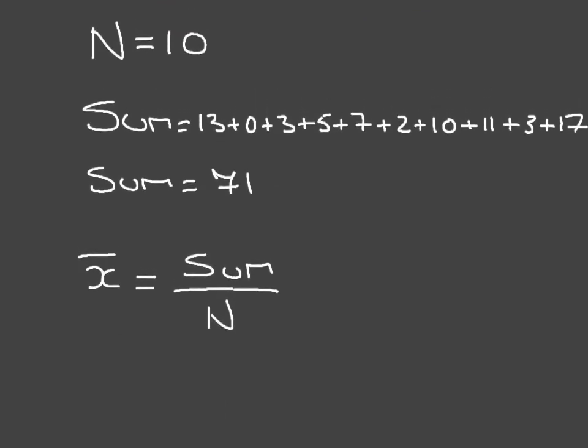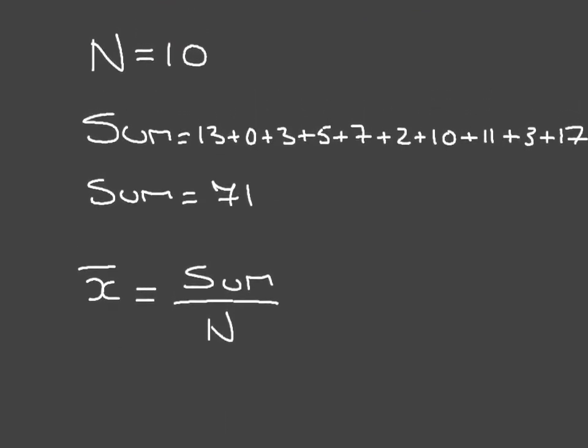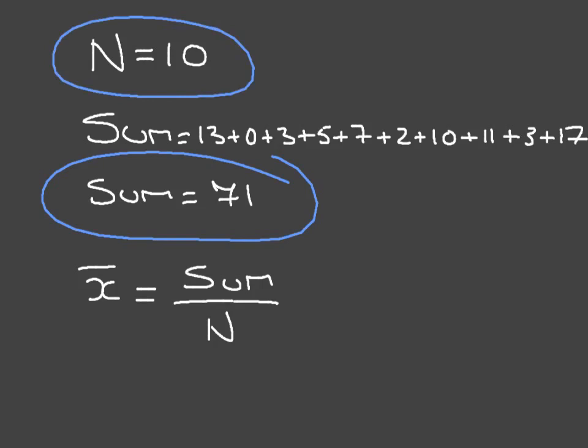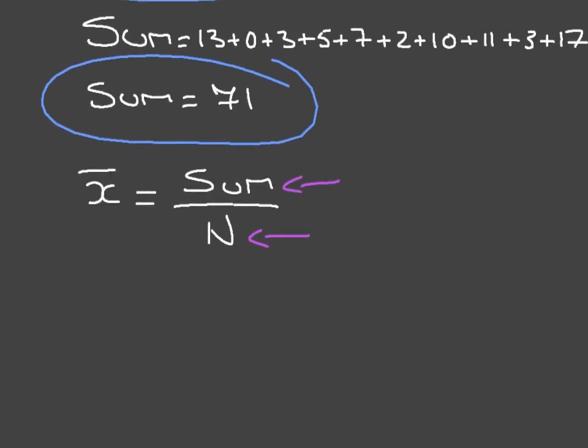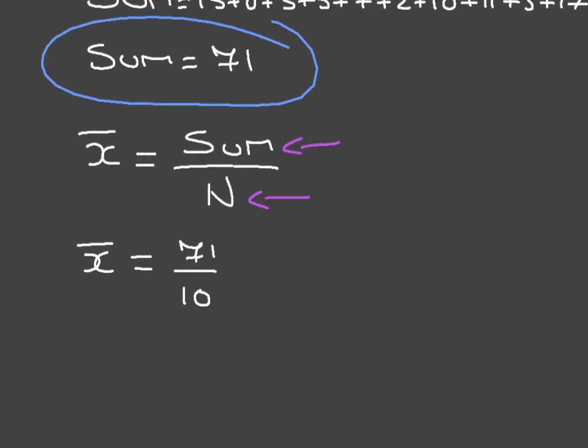And since N was 10 and the sum was 71, I'll just highlight these here. We had the sum was 71 and the number of values was 10. We can replace this in our formula here. We can replace both of those values. And we can now write that the mean is equal to 71 divided by 10. And dividing 71 by 10 will lead us to the answer, which is the mean is equal to 7.1.